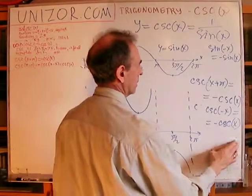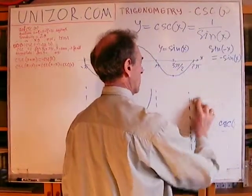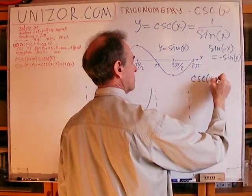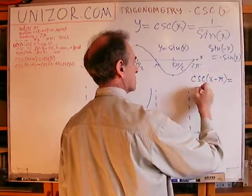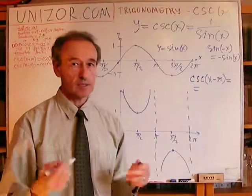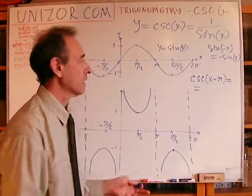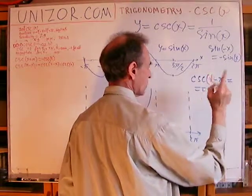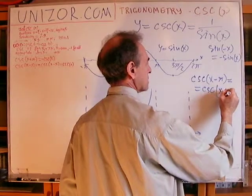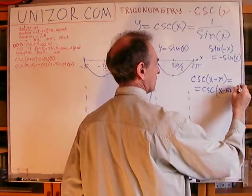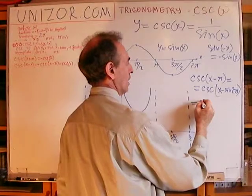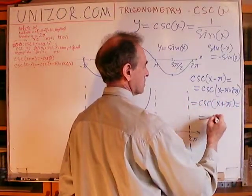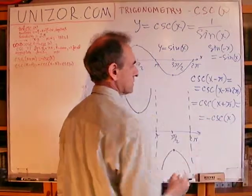Finally, x minus π. Csc(x - π) is equal to... well, let's think about it. It's a periodic function, so you can always add 2π. It will be the same as csc(x - π + 2π), which is csc(x + π), which we just talked about—it's -csc(x).